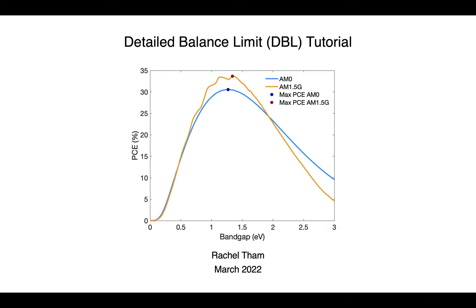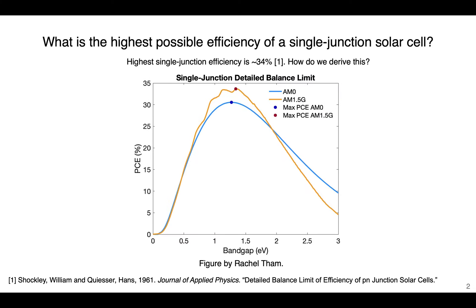Today I'll be giving a tutorial on this very important concept. The graph shown here is the Detailed Balance Limit that many researchers talk about when they work with solar cells. We're going to talk about what this graph means and why it's important. Many of the questions that solar cell researchers ask are: what is the highest possible efficiency of a single junction solar cell?